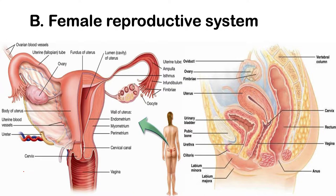Next to the ovary is a part of the reproductive system that is not connected to it. Your uterine tube, or fallopian tube, is another part of the female reproductive system that is not connected to your ovary, but has fimbria — finger-like projections — that actually sweep the released oocyte from your ovary and transport it into your uterine tube.